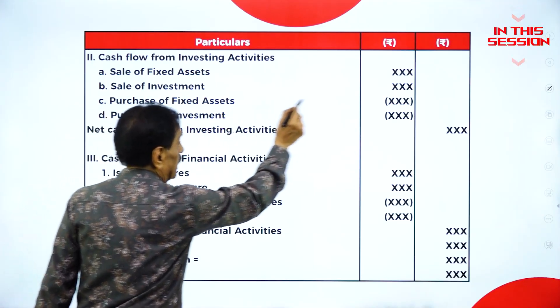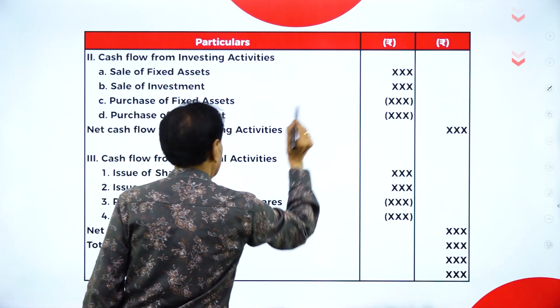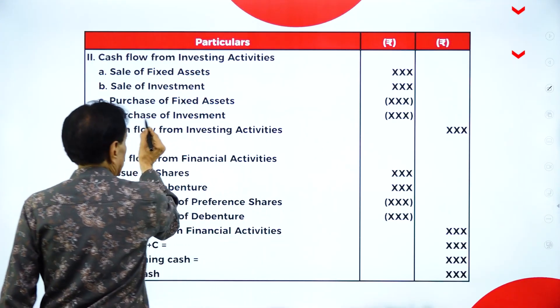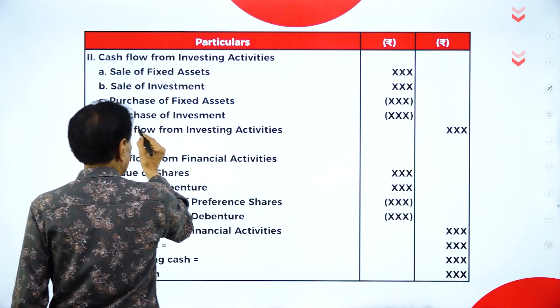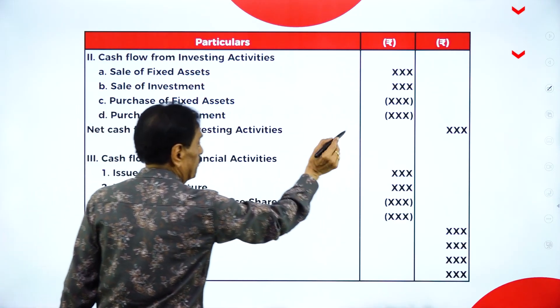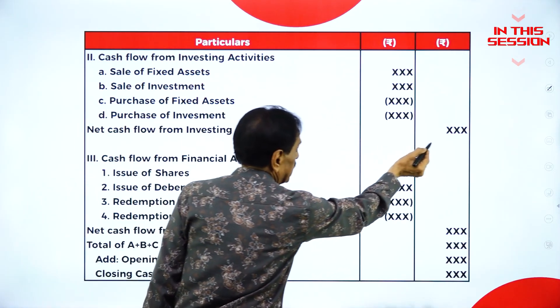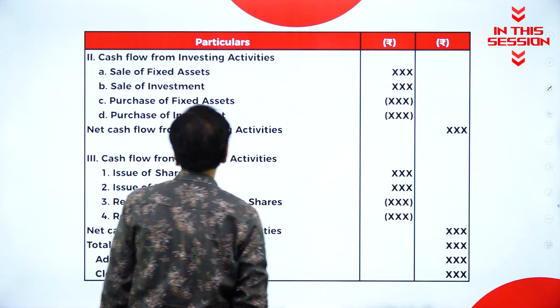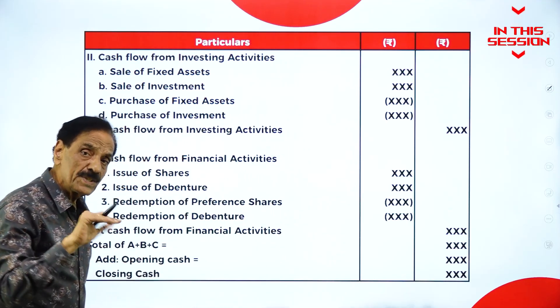Sale of fixed asset — inflow. Sale of investment — inflow. Purchase of fixed asset — outflow. Purchase of investment — outflow. Net cash flow from investing activity.